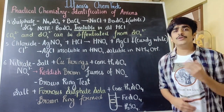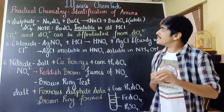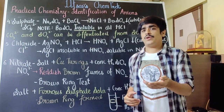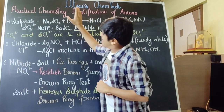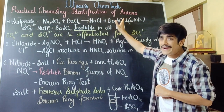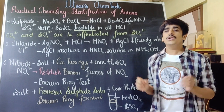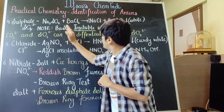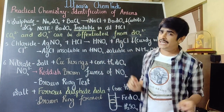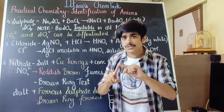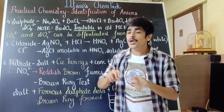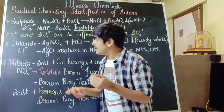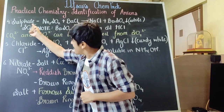The next anion we are going to identify is sulfate, given by the formula SO4 2-. The solution that helps us identify sulfate is again barium chloride. If barium chloride solution is added to any kind of sulfate, you get the formation of a white colored precipitate of barium sulfate. The very important thing to understand is that barium sulfate is insoluble in dilute HCl. To recap: barium carbonate was soluble and barium sulfite was soluble. So using barium chloride, you are capable of differentiating between a carbonate, a sulfate, and a sulfite.